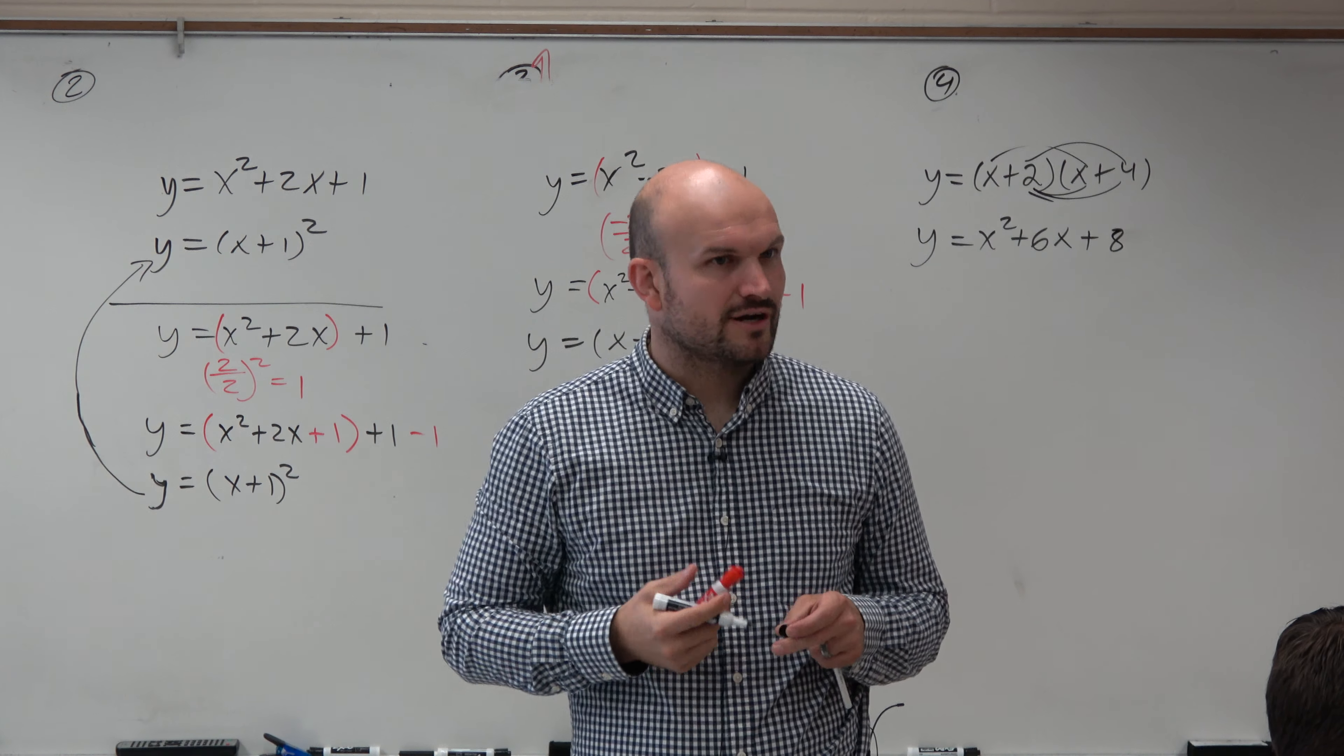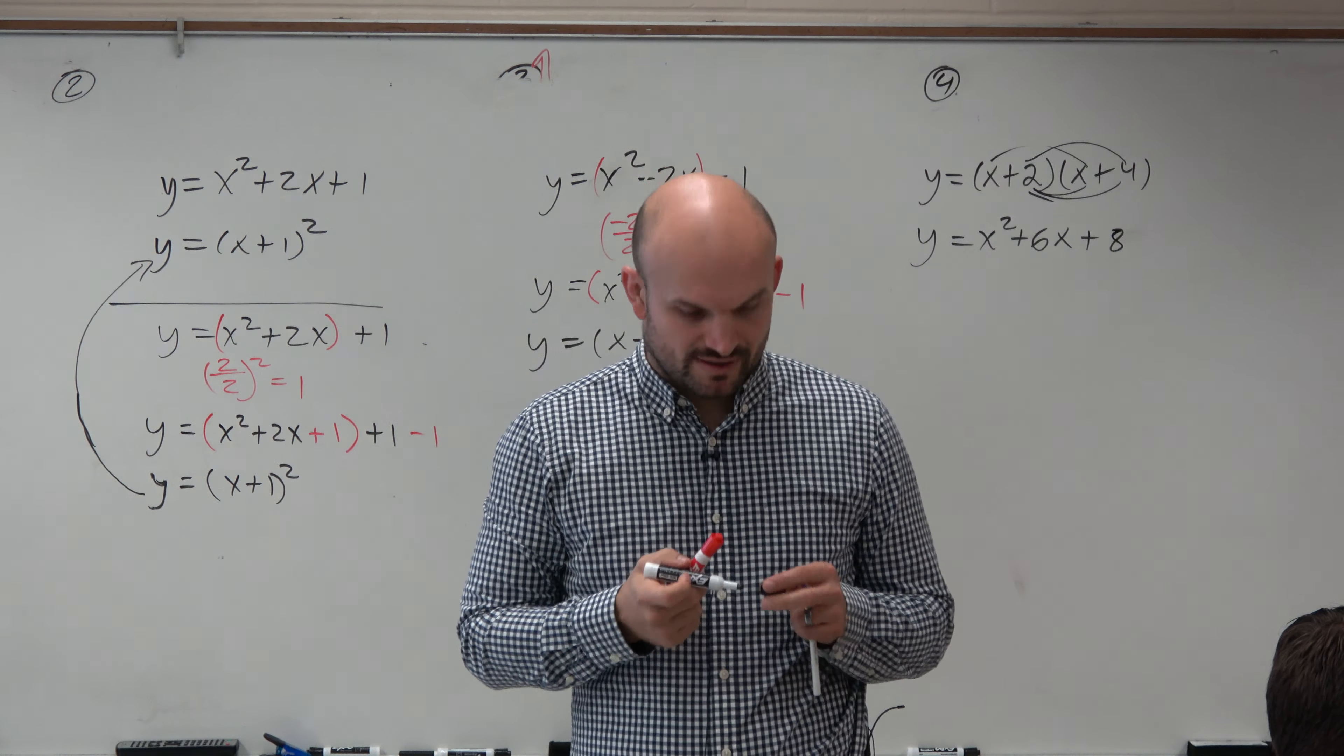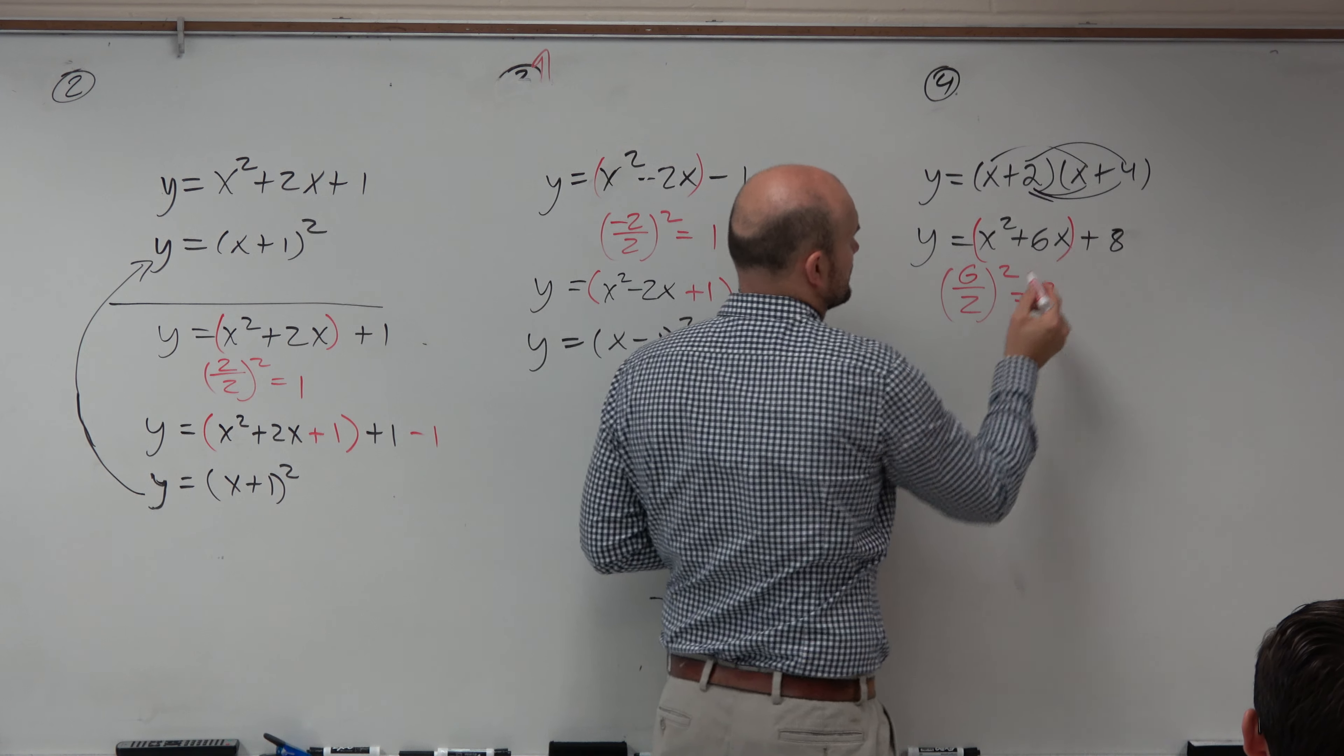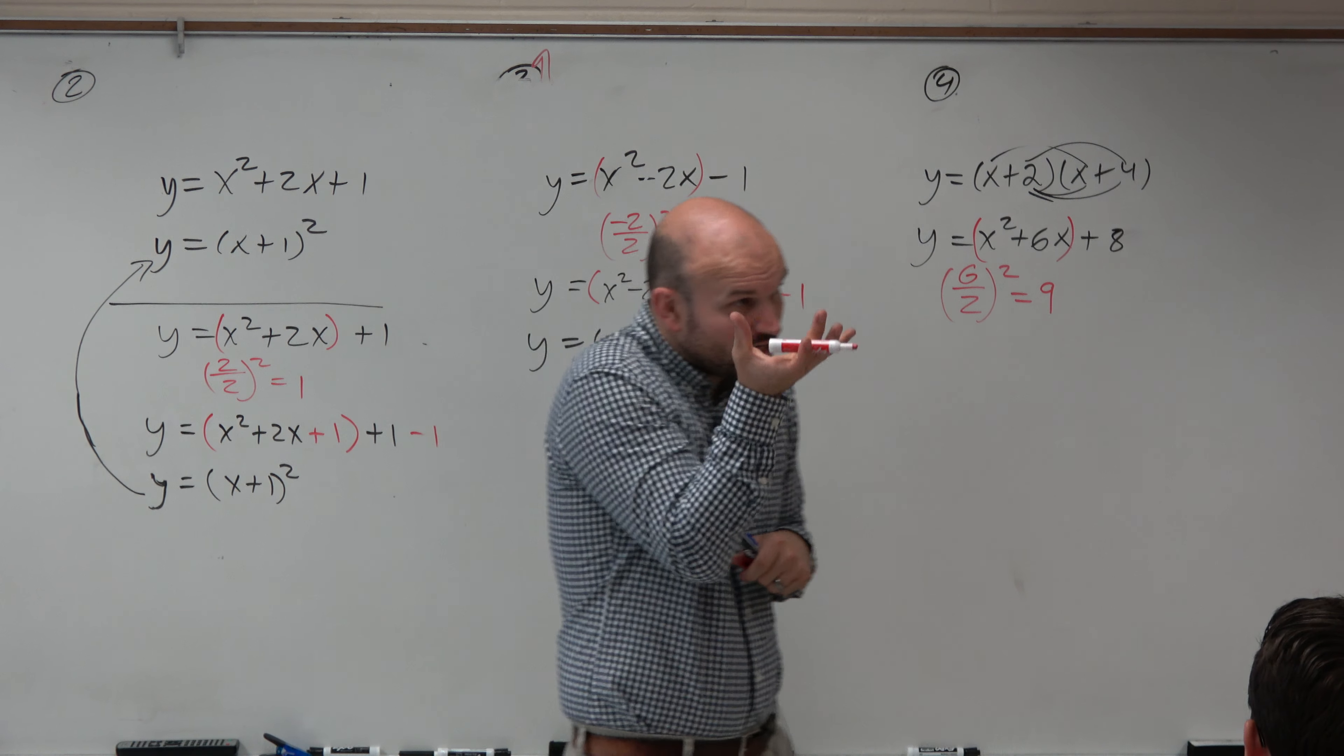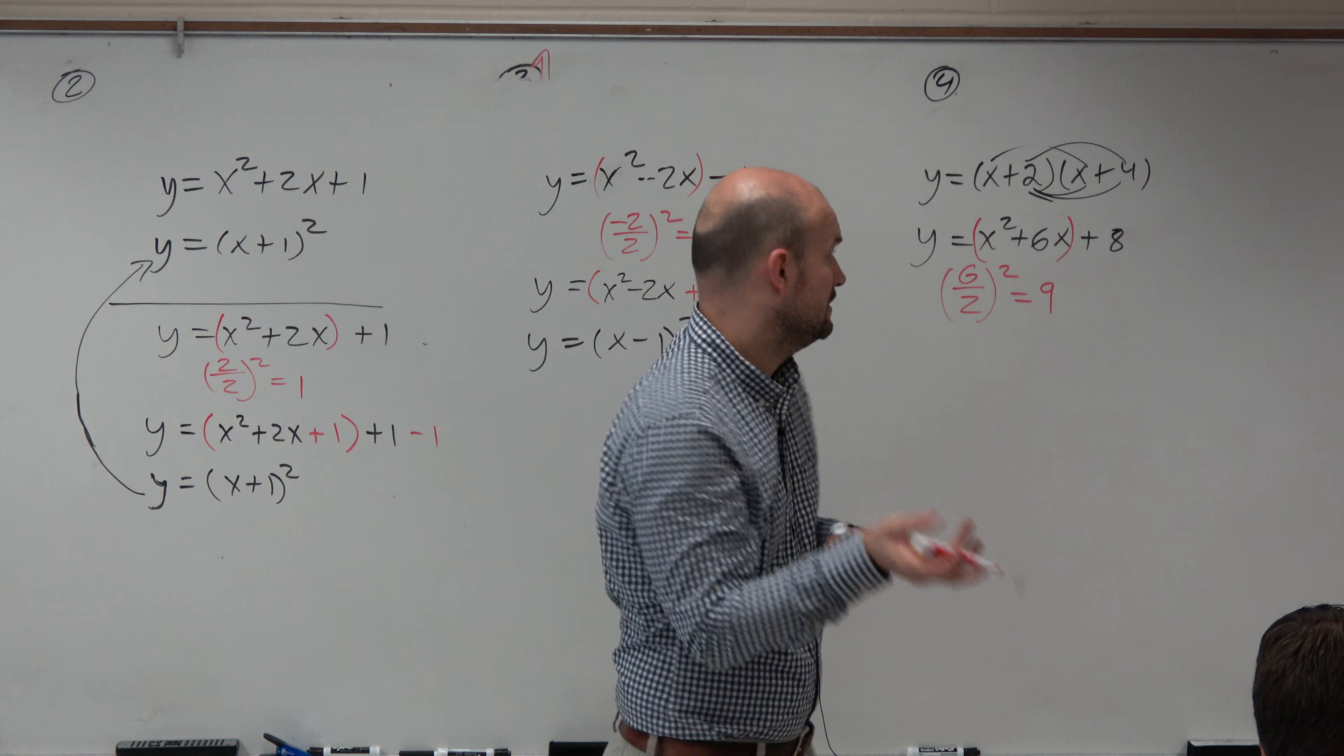x squared plus 6x plus 8. And then I say, I've got to figure out what that middle term is. So now in this case, I know this is not a perfect square trinomial. But what do I do? Take the middle term b, divide it by 2, and square it. So we're going to take 6, divide it by 2, and square it. 6 divided by 2 is 3. 3 squared is 9. I'm sorry. Group the first two terms. Right? That's what we want to create a perfect square trinomial on, is the first two terms.